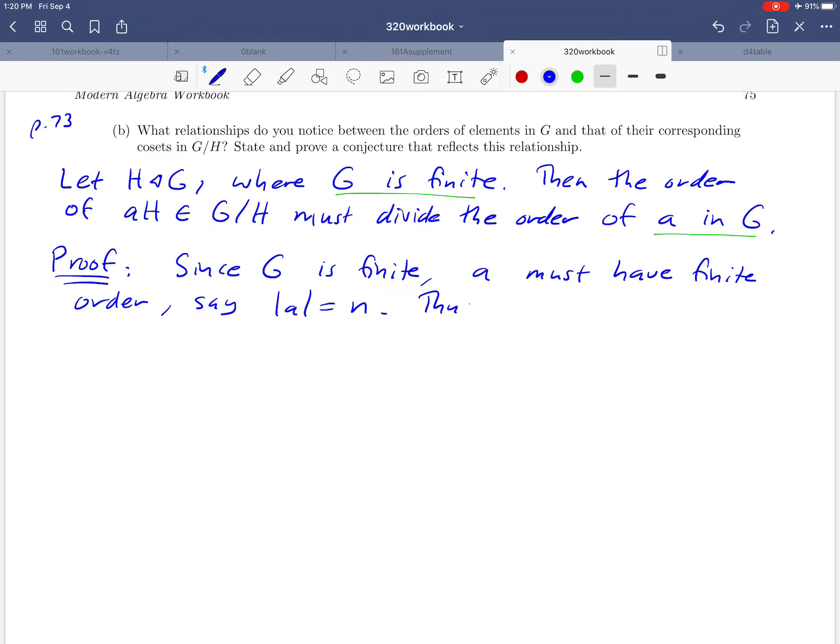Well, if that's true, that means that if we raise A to the nth power, we're going to get the identity. But if that's the case, we can do a corresponding calculation with cosets. What if we took the coset generated by A and raised it to the nth power? Well, by definition, that's going to be the element A to the n times H. And we just made the observation that A to the n is equal to E, the identity element, and E times H, that's just the coset H, which is the identity in our factor group G mod H.